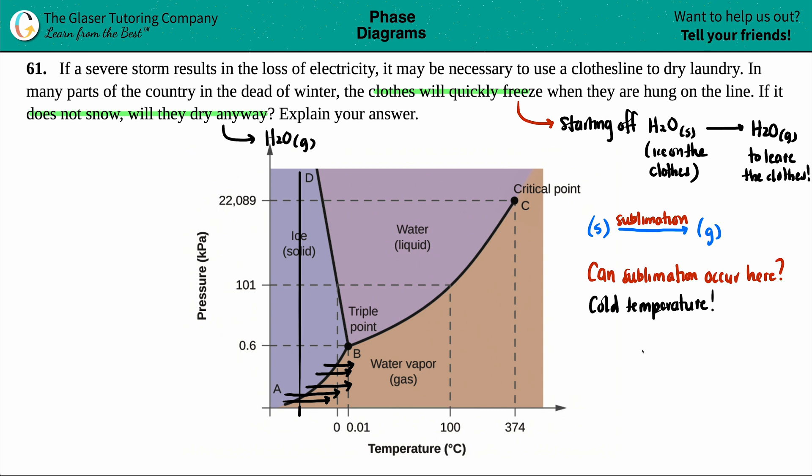So can we get those clothes to dry? Yes, we can. So yes, the clothes will dry. Why? And the reason being is that sublimation can occur at low temperatures. Sublimation can occur at low temps and relatively low pressures. Okay, but basically the answer here is yes. You can bypass the liquid stage to get to sublimation. And that's it.